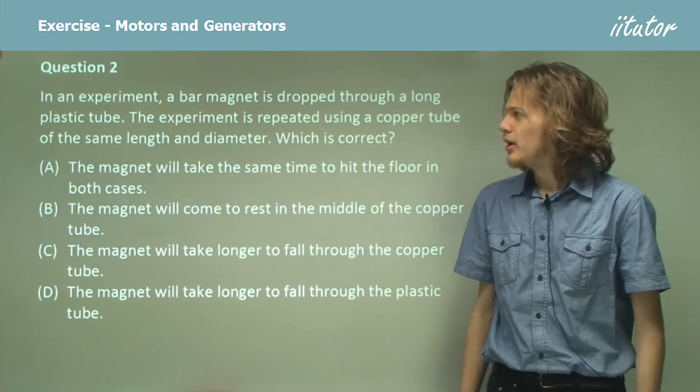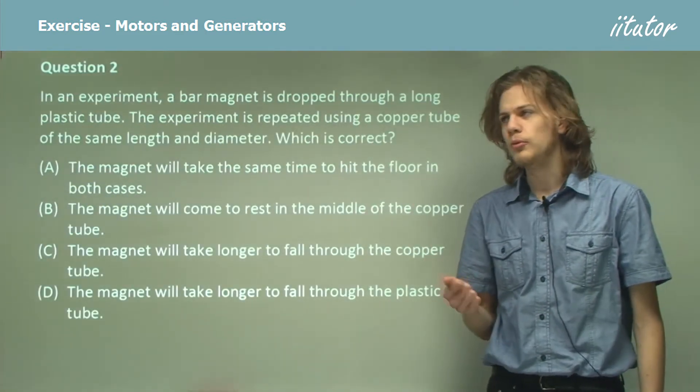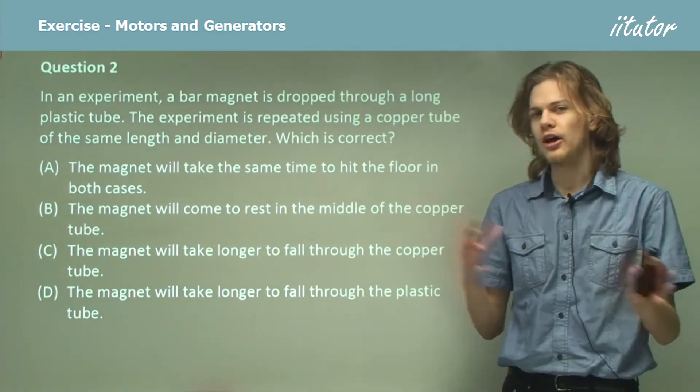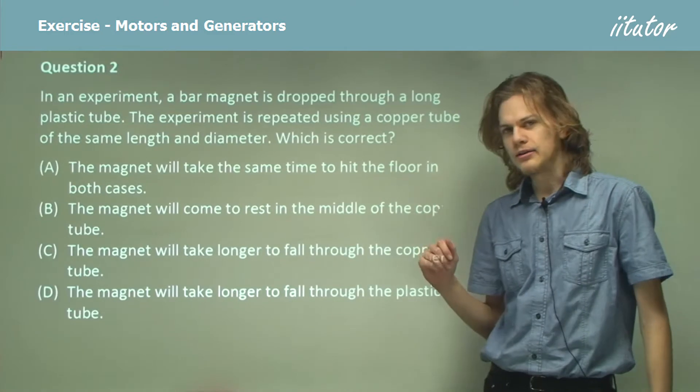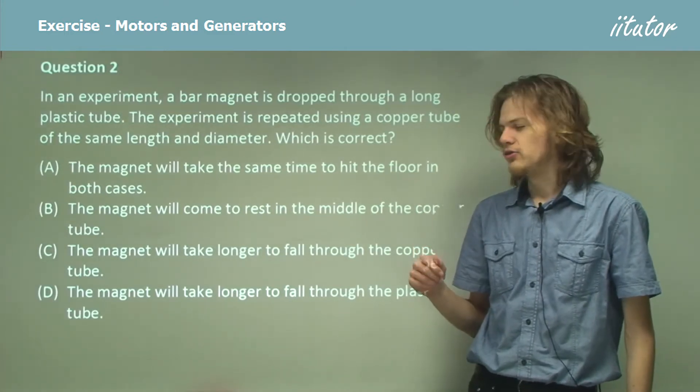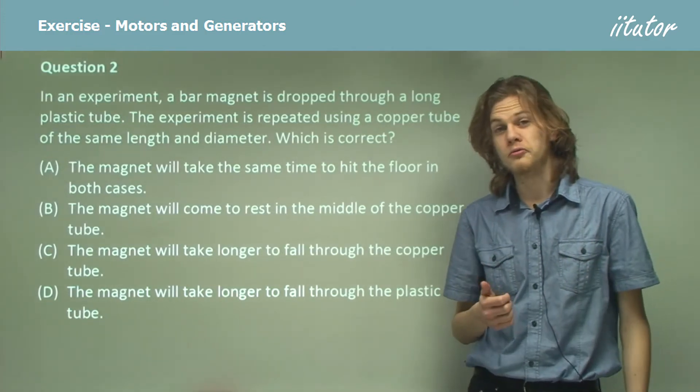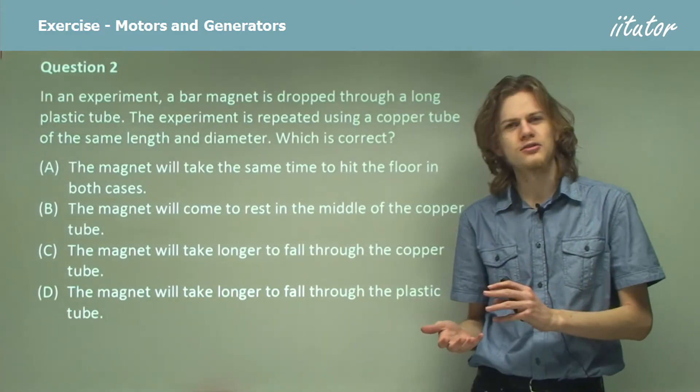Question 2. In an experiment, a bar magnet is dropped through a long plastic tube. The experiment is repeated using a copper tube of exactly the same length and diameter. Which is correct? Will the magnet take longer to fall through the plastic tube or the copper tube, or take the same amount of time because gravitational acceleration is the same?